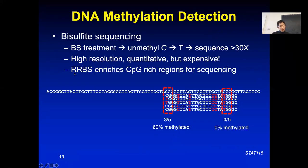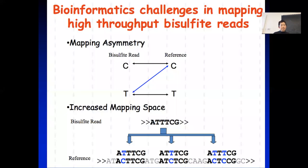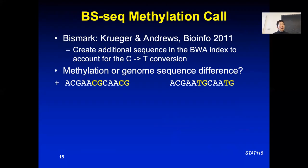Because bisulfite sequencing is expensive, techniques like RRBS were developed, which mostly enrich for CpG-rich regions like CpG island sequences in the genome. This way you sequence only where it counts, saving costs. For read mapping, there are algorithms like Bismarck or Bsmap that create the additional sequence index in BWA to account for C-to-T conversion during bisulfite treatment, making mapping more complicated.